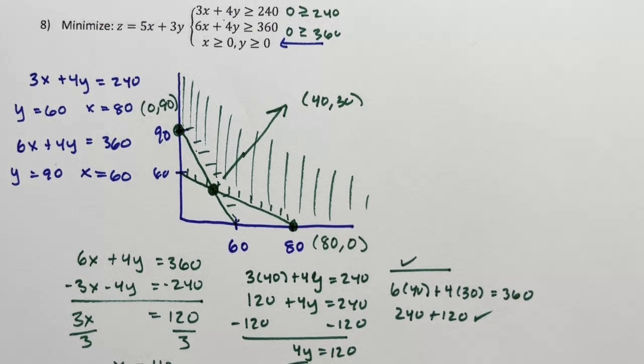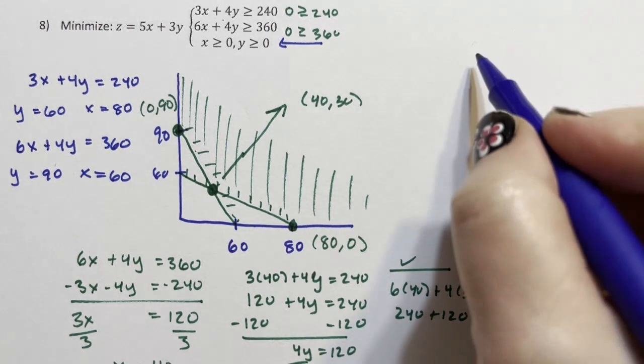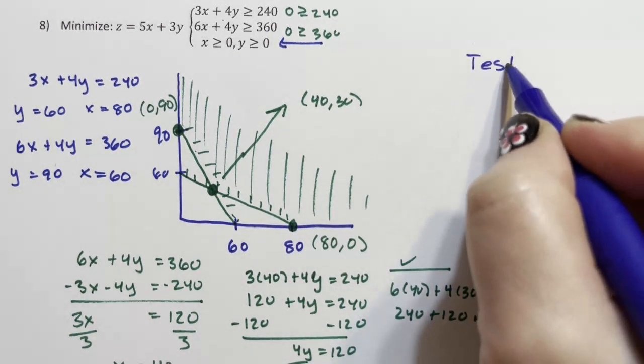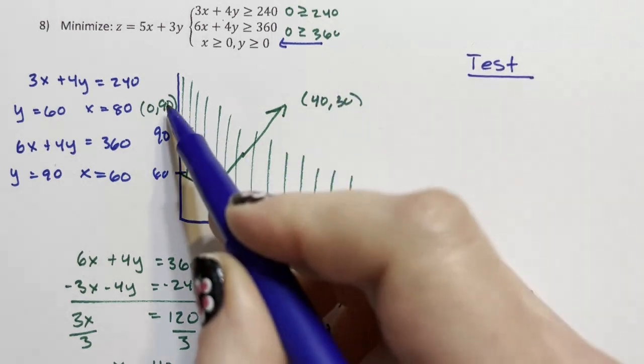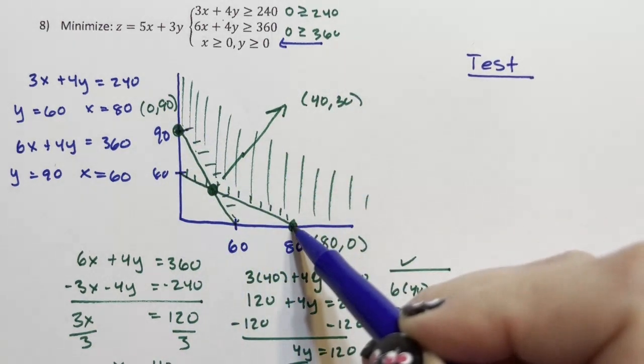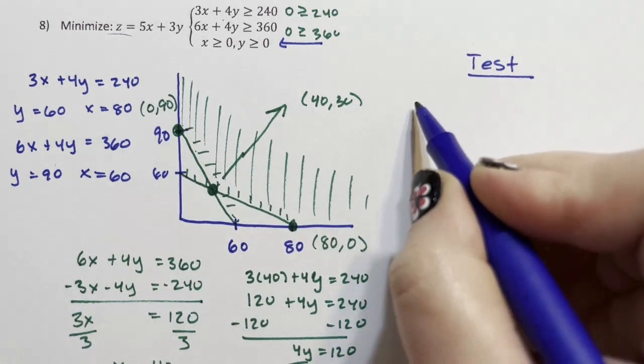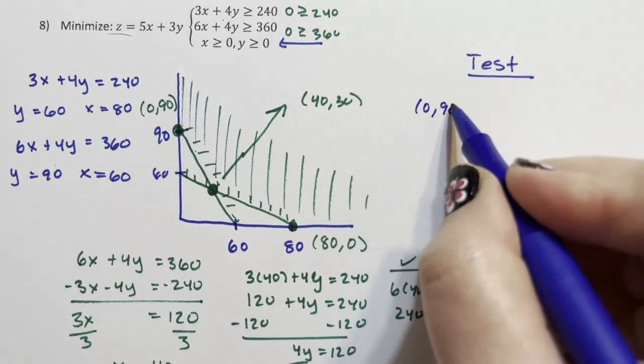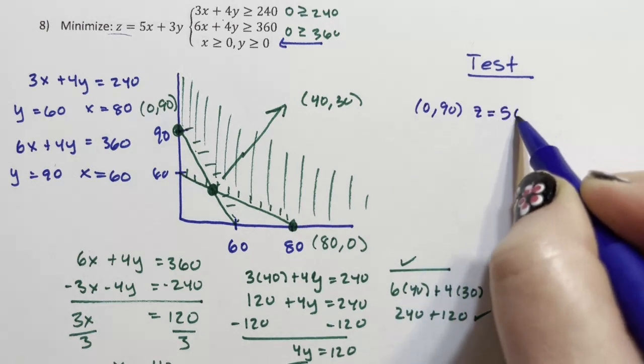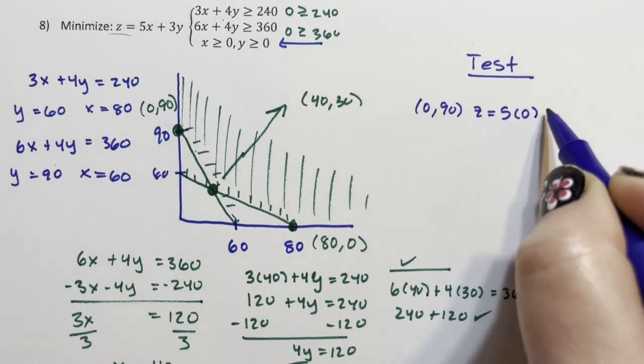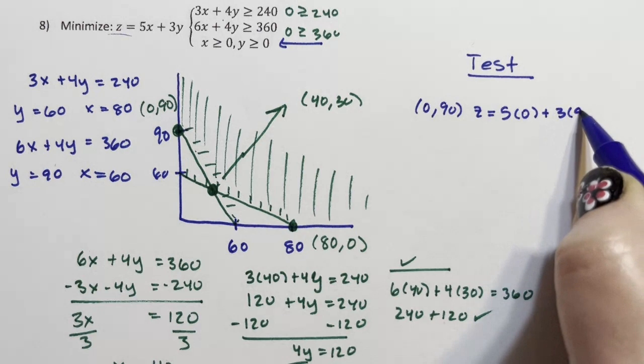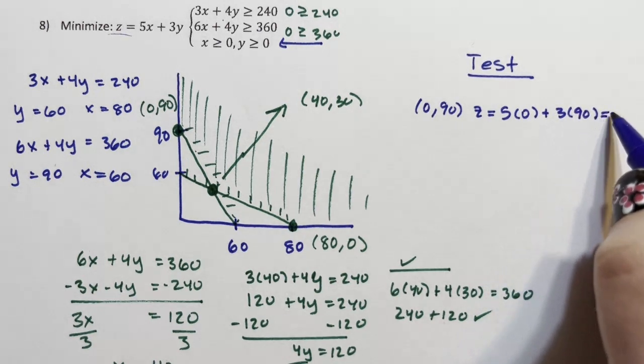To figure out the minimum, I test each of these three corners of the feasible region with this equation. So I test 0, 90. z equals 5 times 0 plus 3 times 90. And I get 270.